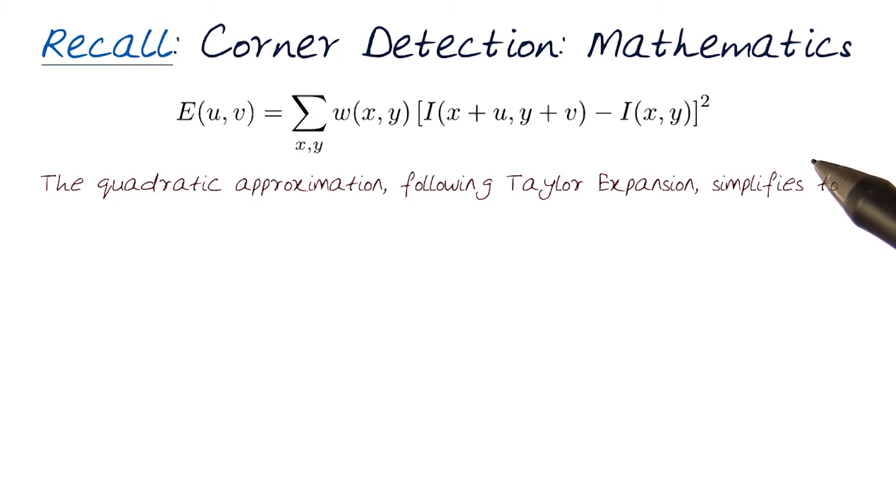Using this equation for corner detection, we leverage the quadratic approximation using Taylor expansion, which gives us another equation resulting in a simpler form.